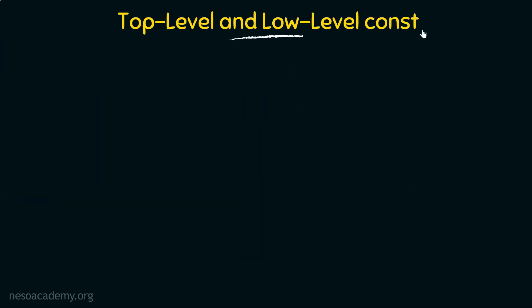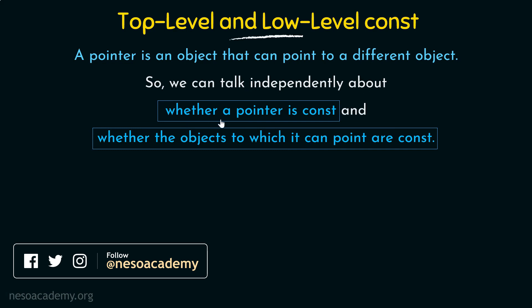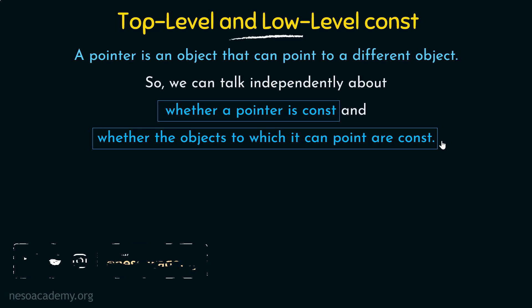Talking about top-level and low-level constants: a pointer is an object that can point to a different object. We have already seen this when we studied about pointers. A pointer is an object by itself and it can point to a different object, so we can talk independently about whether a pointer is a constant and whether the objects to which it can point are constants. If you have not watched the previous lecture, I strongly recommend that you watch it first before continuing, because most of the things we are discussing here are based on what we studied in the previous lecture.